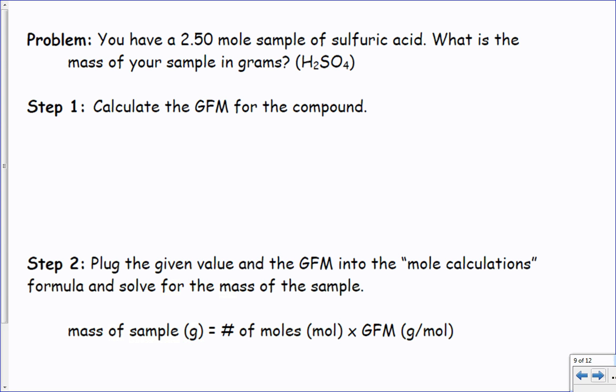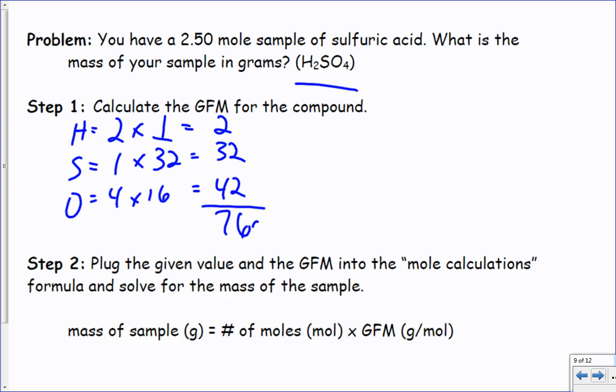Calculate the gram formula mass for the compound H2SO4 is step one. There's two hydrogens times one gram per hydrogen is two. Sulfur, there's one of them, is 32. Oxygen, there's four of them times 16. Four times six is 24, plus 32 is 42, excuse me. I got 76 grams per mole for my GFM.